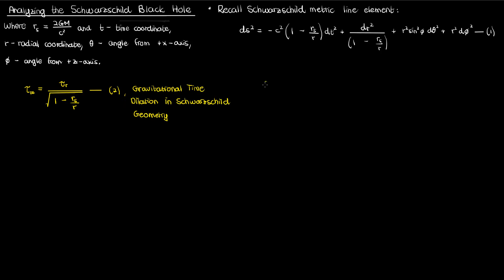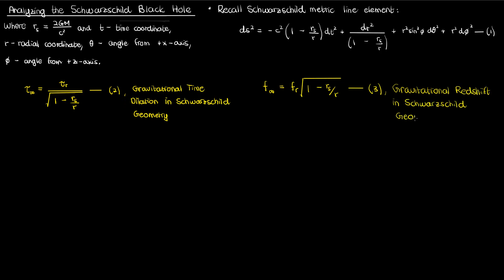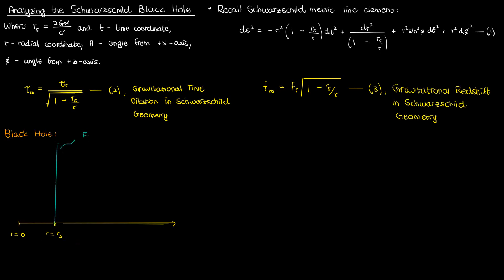And finally, recall from my last video that the frequency of waves emitted at the radial coordinate r is related to the frequency of those waves perceived at infinity by the following equation — this is the equation for gravitational redshift in Schwarzschild geometry, equation 3. Let's now draw a diagram where we've got our black hole. The center of that black hole is our radial coordinate r equals 0, and the radial coordinate r equals r sub s is here. This threshold at the r sub s radial coordinate has a special name: it's called the event horizon of the black hole.